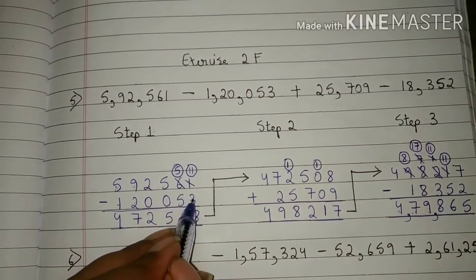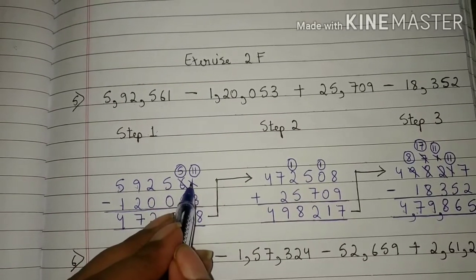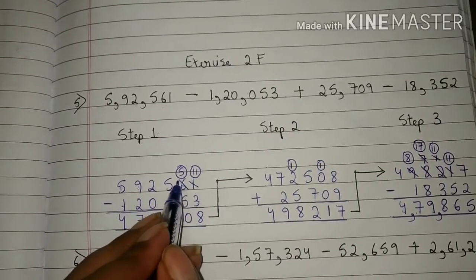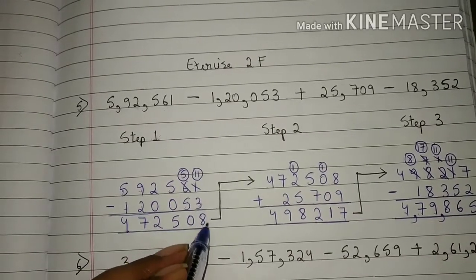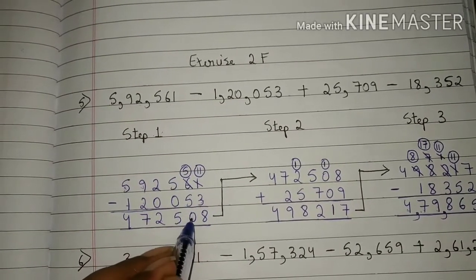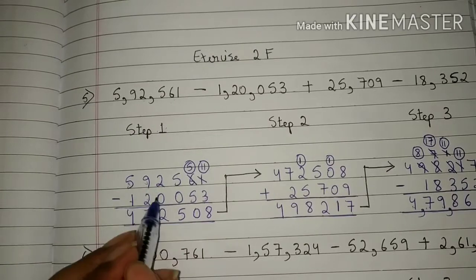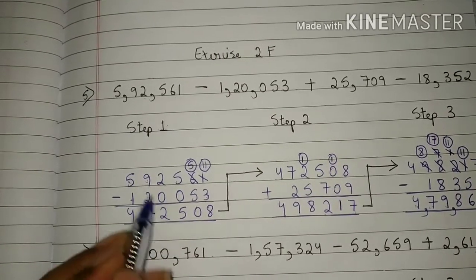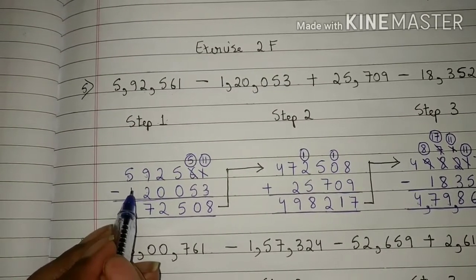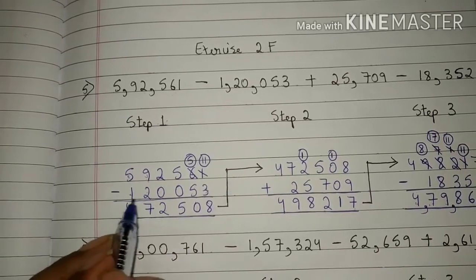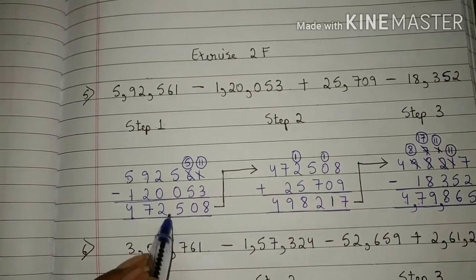1 is smaller than 3, so we will borrow one number from 6. Now 1 will become 11 and 6 will become 5. 11 minus 3 is 8. 5 minus 5 is 0. 5 minus 0 is 5. 2 minus 0 is 2. 9 minus 2 is 7. 5 minus 1 is 4. So the answer of step 1 is 4,72,508.